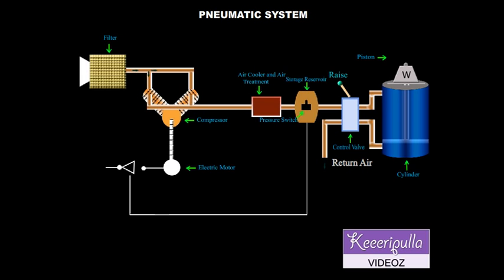In the lower position of the control lever, the top port is connected to the pressure line. The piston moves down and the weight is lowered. In the off position, the air is locked inside the cylinder.